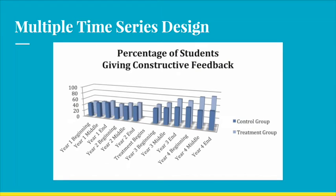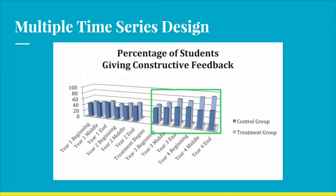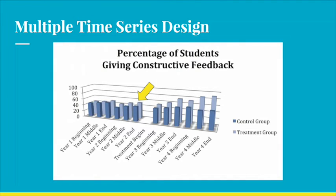Thinking back to our original question, this data shows how small groups affect student ability to give constructive feedback. The first set of box data shows the percentage of feedback before the treatment was implemented. The second set shows the percentage after the treatment. The control group — the group that did not receive the treatment — stayed consistent over the four-year sample period, while the treatment group was consistent before treatment and increased significantly after treatment.